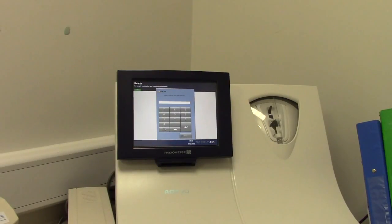The Radiometer AQT90 Analyzer can process procalcitonin tests on whole blood or serum in 20 minutes. Samples do not need to be spun, which saves time. It will give you a printed numerical result and store the result on the analyzer.